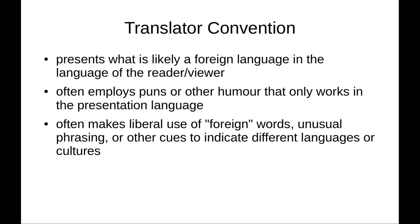The translator convention will often make liberal use of foreign words or unusual phrasing or other things as cues to indicate different languages or cultures, and that's perfectly reasonable. If you're consistent in the cues you use and you don't go over the top with it — one of the common cues used is to introduce the dialogue in a native language by starting out with a couple of words in that foreign language, then like one statement, and then switch to English and not bother with any other foreign words. That does require though that the foreign language exists in some form. It's not so bad with a real human language like German or Spanish or Japanese — you can definitely grab a phrase or two and then go on with English.